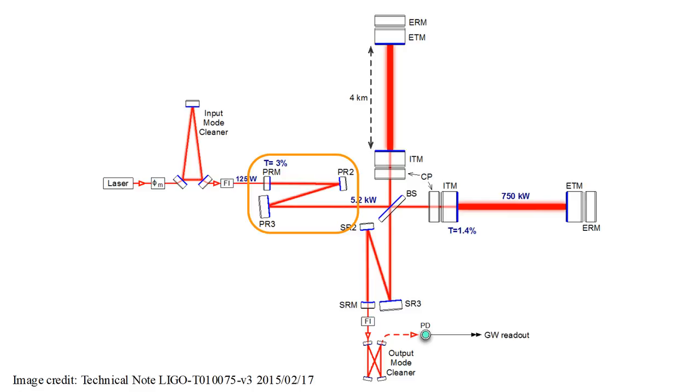Another enhancement is the addition of a system of power recycling mirrors. When aligned for greatest sensitivity, most of the light coming out of the interferometer arms combines at the beam splitter in a beam directed back toward the laser's source. The power recycling mirrors reflect most of this back toward the beam splitter, from which the power is directed back into the interferometer arms. Power recycling, combined with the Fabry-Perot cavities, results in 750 kilowatts of power in the interferometer arms, when the laser power entering the system is only 125 watts.